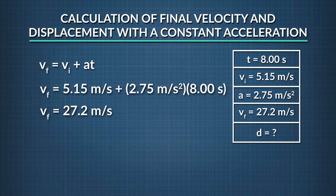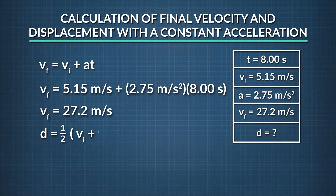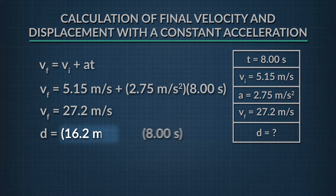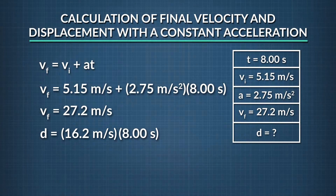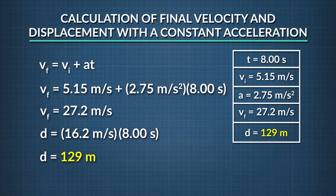To solve for displacement, we can use the equation from the first problem: displacement equals one half of the product of the sum of the initial and final velocities times the time. So if we take one half of the sum of 5.15 meters per second and 27.2 meters per second, we get 16.2 meters per second. Then multiplying that times the time elapsed, which was 8.00 seconds, we get 129 meters. So the displacement was 129 meters for this car.